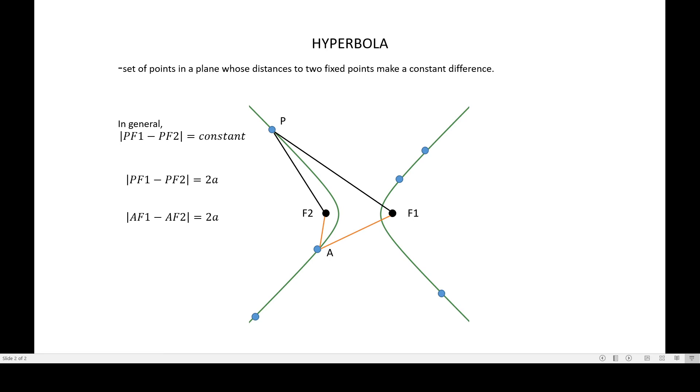Notice that it is the same with the previous one because the definition is telling you that it will always make a constant difference. You can have point B there. The distances to F1 and F2 will always make a constant difference, which is 2a again. If you have point C, then CF1 to CF2, subtracting them, will give you 2a.